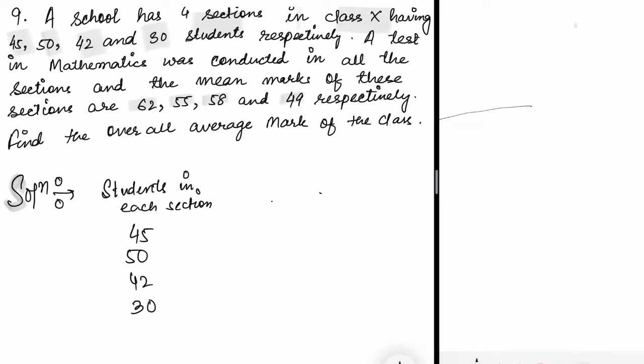A test in mathematics was conducted in all sections and the mean marks of these sections are given. Mean marks are 62, 55, 58, 49. Let me name this: students in each section is our frequency fi, and these mean marks are xi. The first step is to find fi×xi.